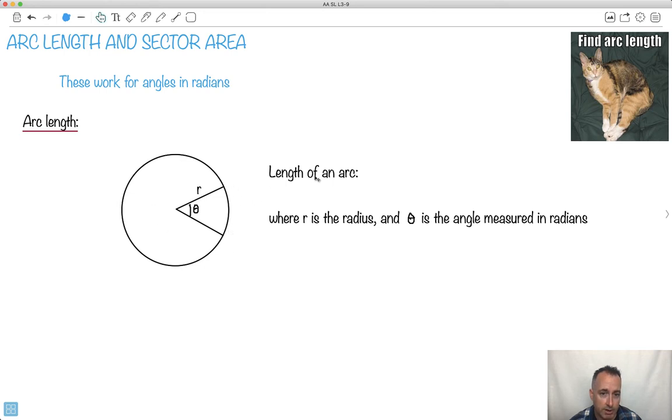The idea will be, all right, well, what happens if we have r as the radius and theta as the angle, but it's measured in radians? Well, then what's the length of the arc? The arc length, then, is just going to be l equals r theta.